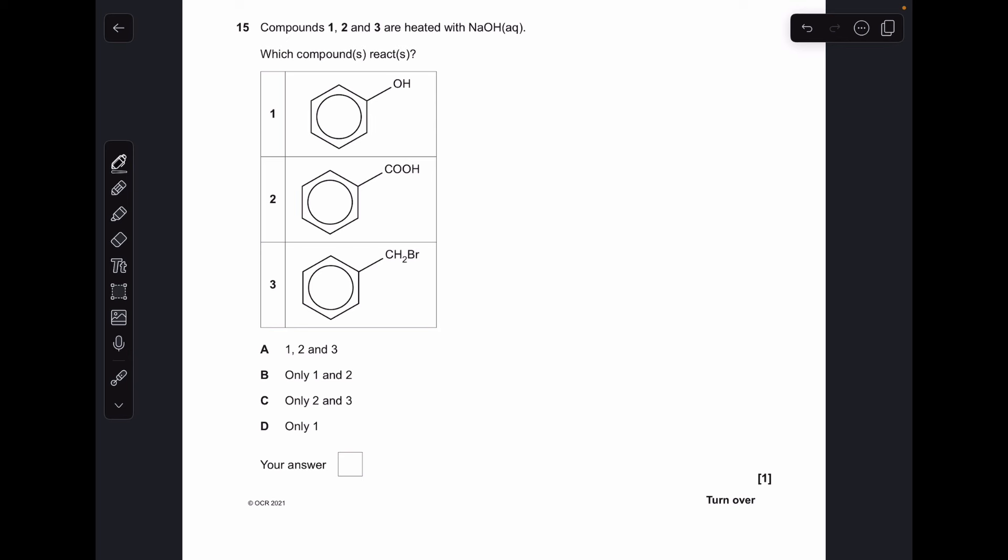And finally, which of these compounds can react with sodium hydroxide? So one can and you get O-Na on that part there. Number two can as well because you end up with C-O-O-Na. And three can as well because you get CH2OH. So all three. So that's A.